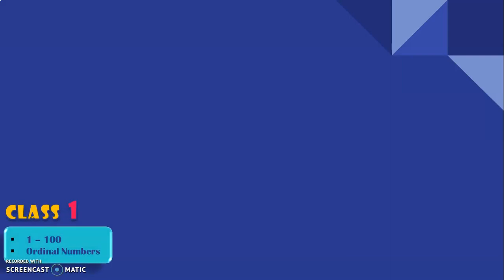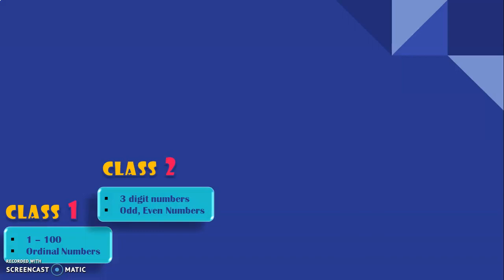In class 1, we saw how to read and write 1 to 100 numbers and number names in series. We also dealt with all aspects related to 2-digit numbers and learnt what ordinal numbers are. In class 2, we dealt with all aspects related to 3-digit numbers and also learnt what odd and even numbers are.